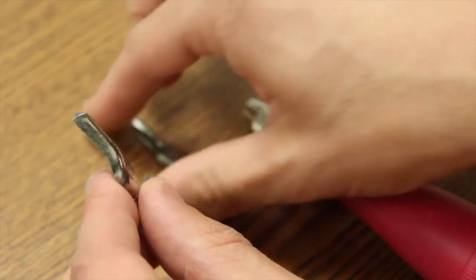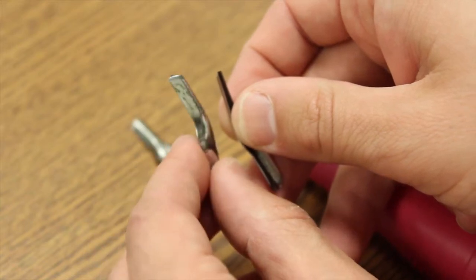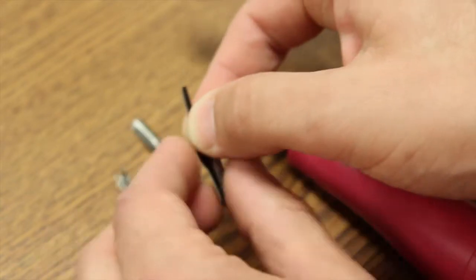Sometimes what I like to do is make one line with this one as a guideline, and then if I need to widen it up, I will take the number two and put it on there.